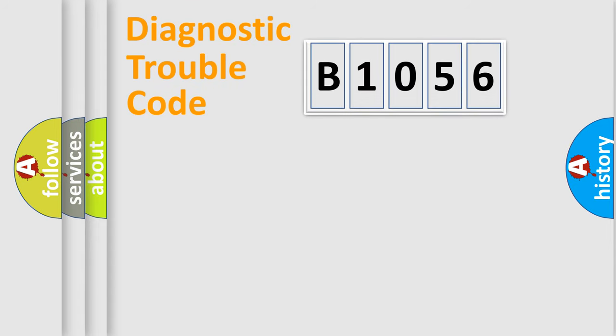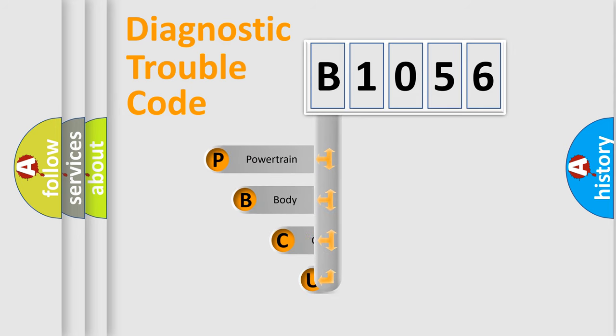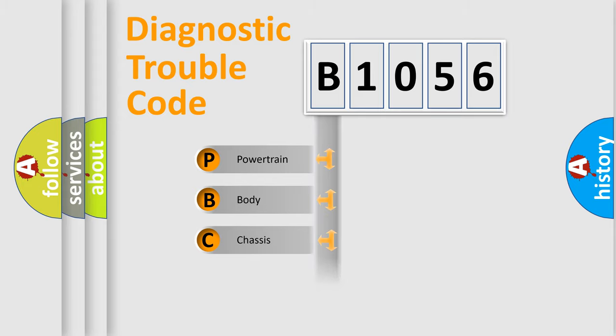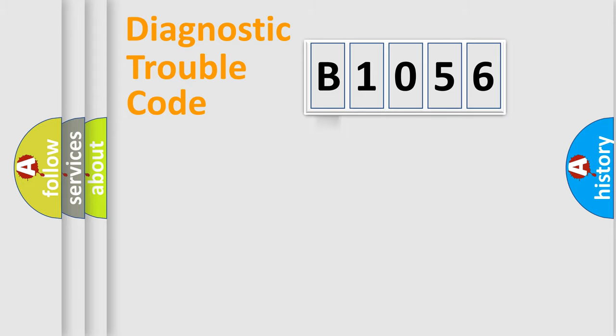Let's do this. First, let's look at the history of diagnostic fault code composition according to the OBD2 protocol, which is unified for all automakers since 2000. We divide the electric system of the automobile into four basic units: Powertrain, Body, Chassis, and Network.